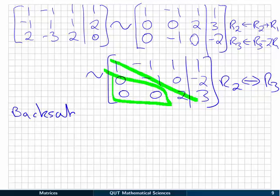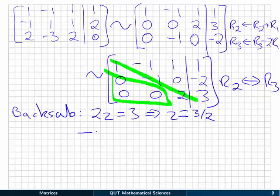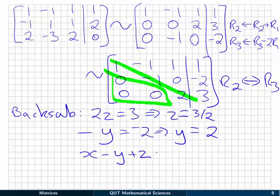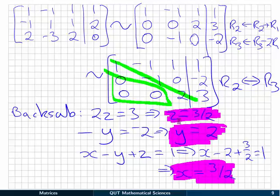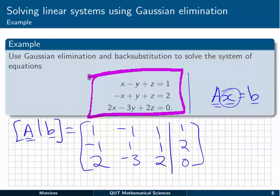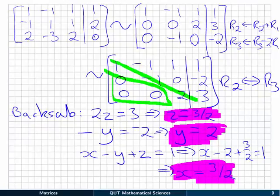Now back substituting: from the bottom row, 2z equals 3, so z equals 3 over 2. Moving to the second row, minus y equals minus 2, so y equals 2. In the top row, x minus y plus z equals 1: substituting, x minus 2 plus 3 over 2 equals 1, which gives x equals 3 over 2. So our solution is x equals 3 over 2, y equals 2, and z equals 3 over 2. You can verify by substituting back into the original equations.